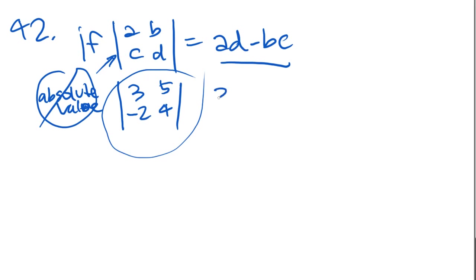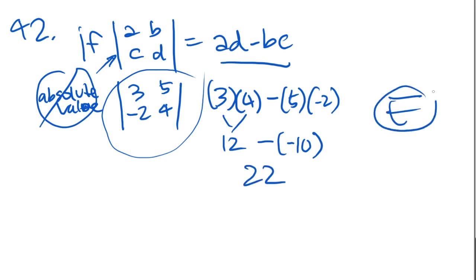So 3 is the A, so you get 3 times D, which is 4, minus B, which is 5, times C, which is negative 2. That gets you 12, 5 times negative 2 is negative 10, 12 times 10, or sorry, 12 minus negative 10 is 12 plus 10, and that is 22. And 22 is answer choice E.